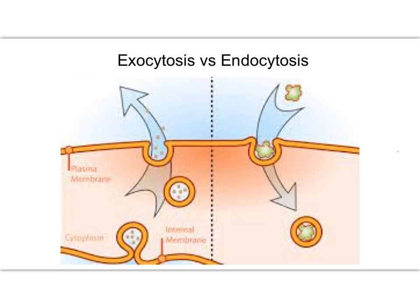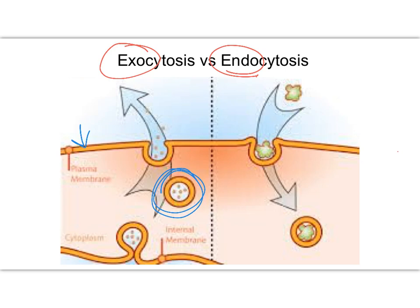Endocytosis and exocytosis are for moving really large molecules — into the cell with endocytosis, or out of the cell with exocytosis. With exocytosis, a vesicle inside the cell — whose membrane is made of the same phospholipids as the cell membrane — fuses to the cell membrane, creates a continuous membrane, and releases its contents to the outside. There's no disruption to the cell membrane, and you've added the surface area of that vesicle to the cell membrane.